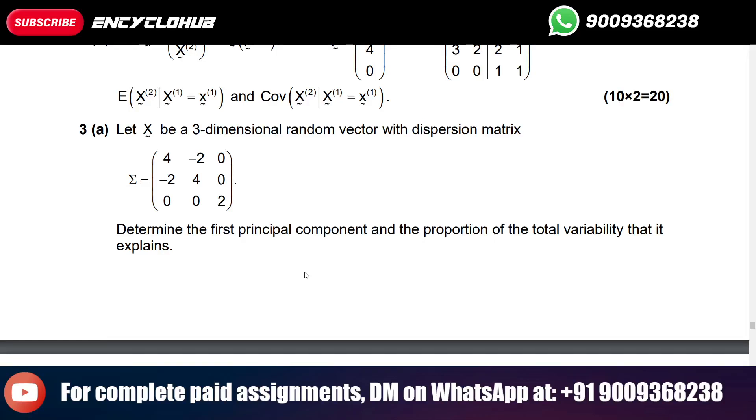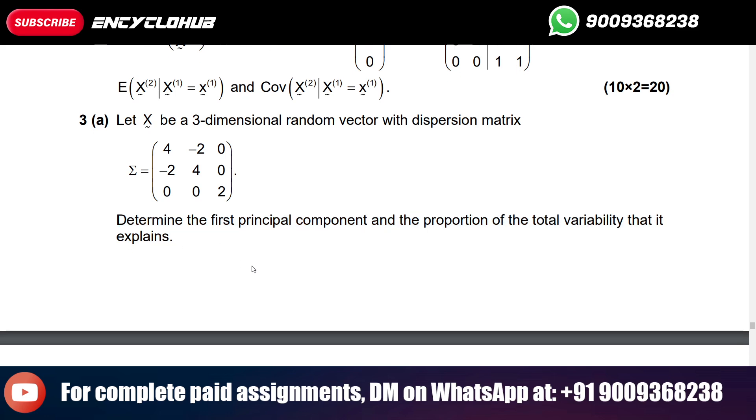Hey guys, welcome back. Today we will see an MSCAST assignment. Let X be a three-dimensional random vector with dispersion matrix, and there is a matrix given which is sigma. You can see now, determine the first principal component and the proportion of the total variability that it explains.